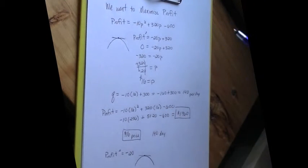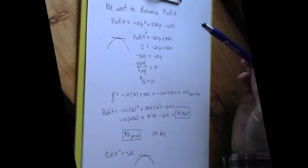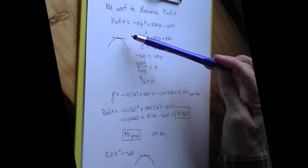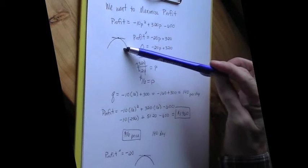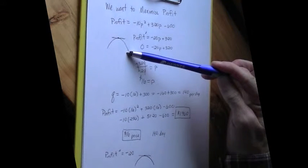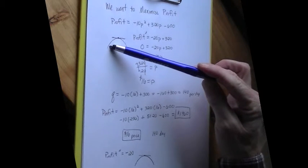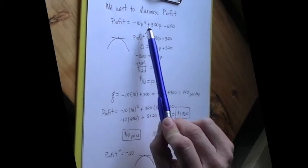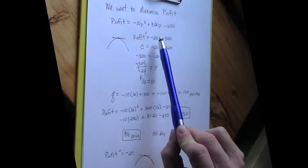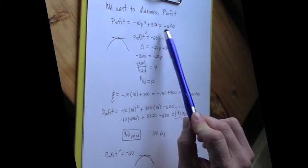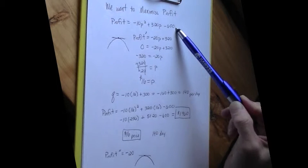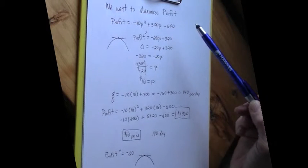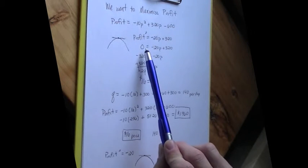And we want to maximize our profit. We know in calculus that a maximum will occur where the derivative is 0, where your slope is 0, and where your graph is concave downward. So we want to find a point where the derivative is 0 and our curve is concave downward. The derivative of negative 10P squared will be negative 20P. The derivative of 320P is 320. And the derivative of a constant is 0, so the negative 600 is a constant, so it's 0.